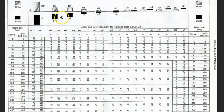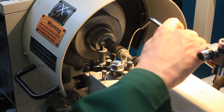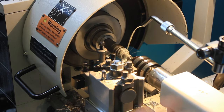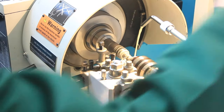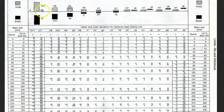What we want to do is create a clearance fit, a transition fit, and an interference fit. We're going to use a chart to interpret the exact size of the hole — which we'll create by drilling and reaming — and the exact size of the shaft, which we'll create by turning on the lathe. The first thing to realise is that wherever we see a capital letter, that represents the hole, and the lower case letter represents the shaft.